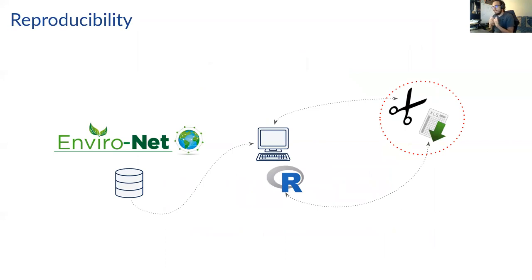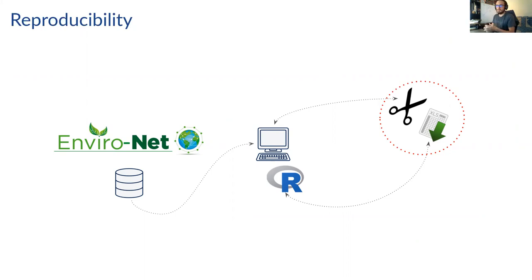On the topic of reproducibility, we have EnviroNet on one side where you can access the data from these towers for this work. You can download the data and analyze it on your computer with R.